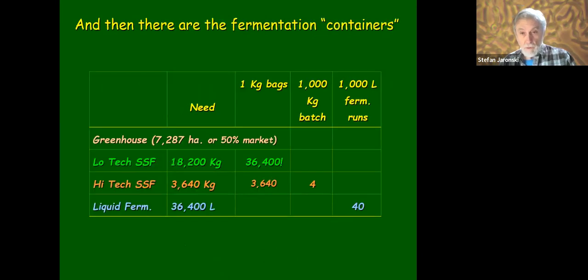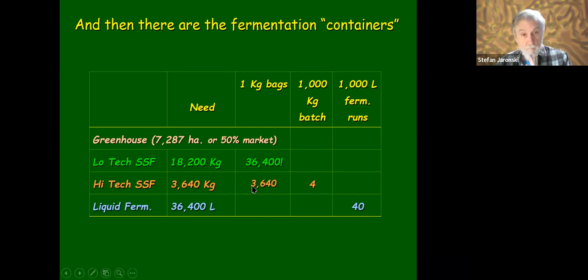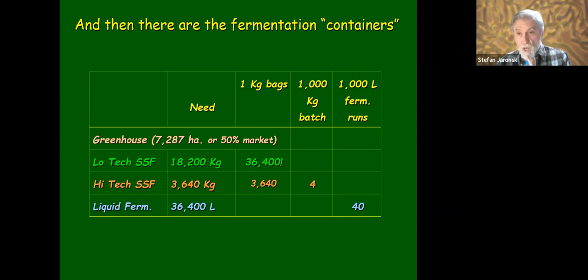What does it mean in terms of solid substrate fermentation versus liquid fermentation? For a low-tech plastic bag method serving a 7,000-hectare market, you need 18,000 kilograms. If you're doing 500 grams per bag, you need about 36,400 one-kilogram bags. The high-tech system that Mycotech developed — with fermentation batch sizes of basically 36 to 40 kilograms — we can do that in four runs. It's an amazing system. With liquid fermentation those are the numbers. Do you go high-tech and low-labor or low-tech and high-labor? It depends on salaries.